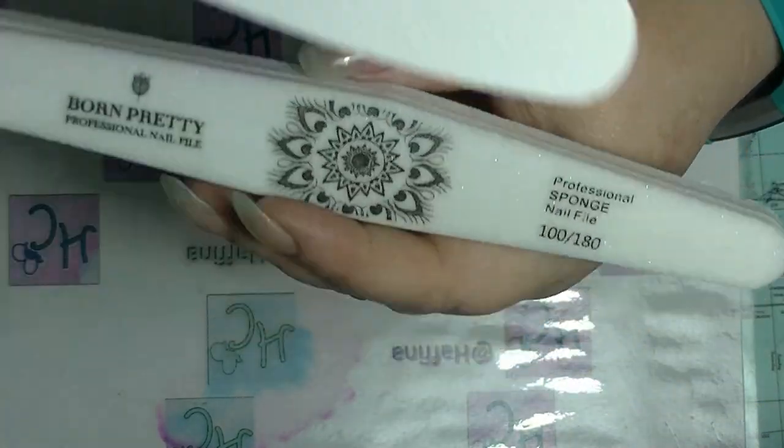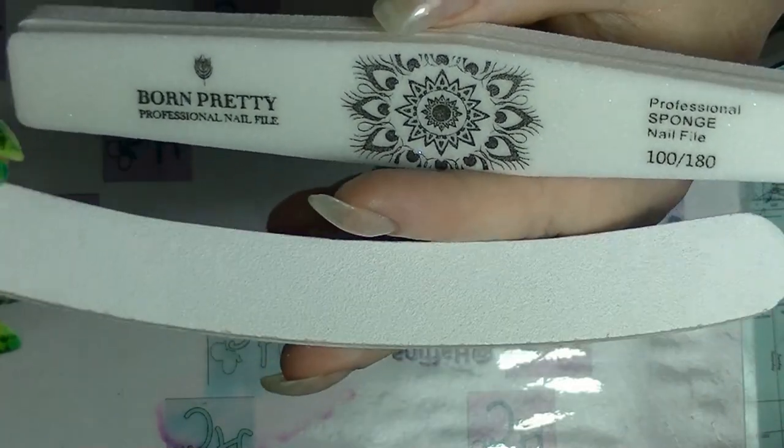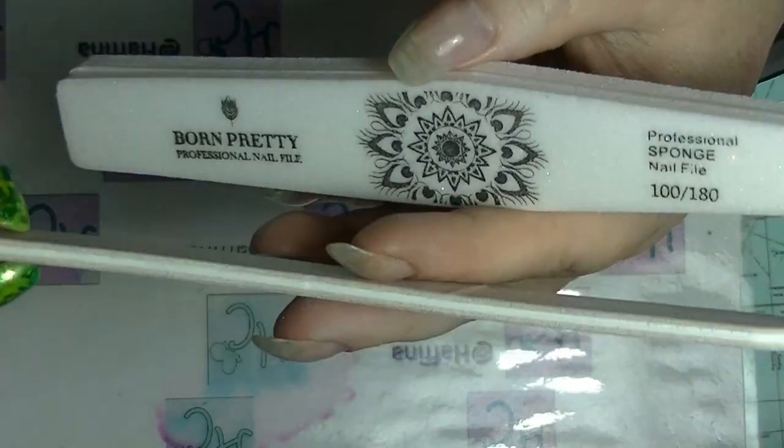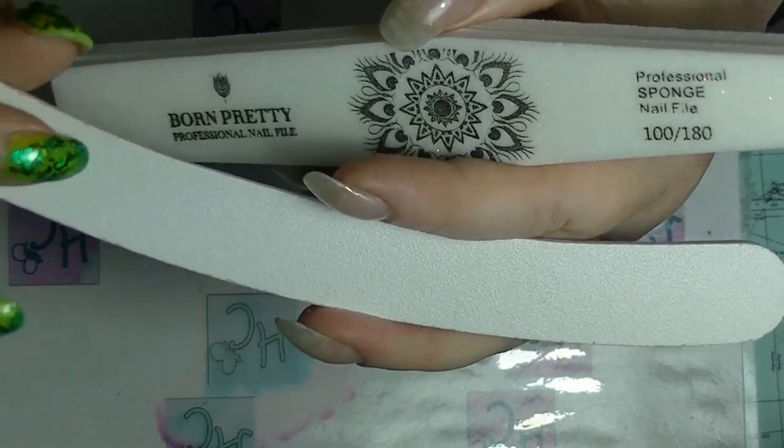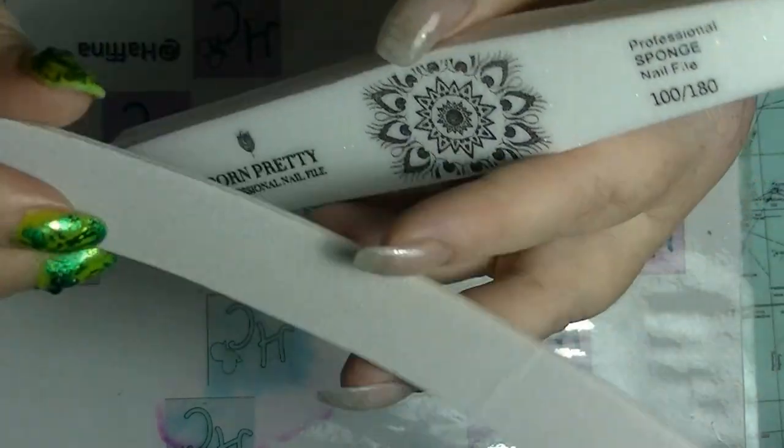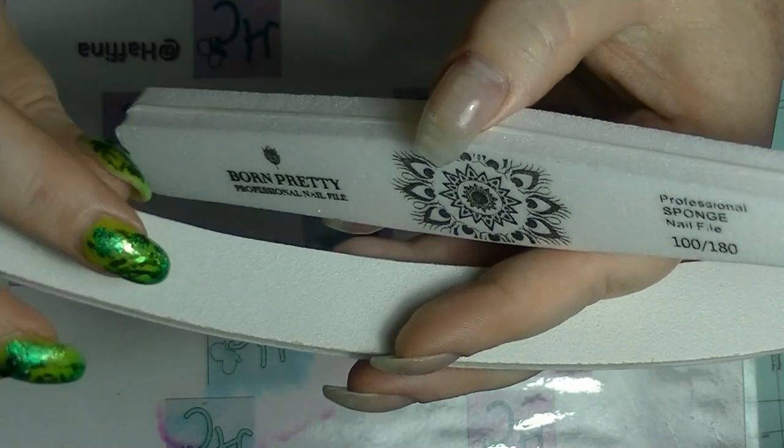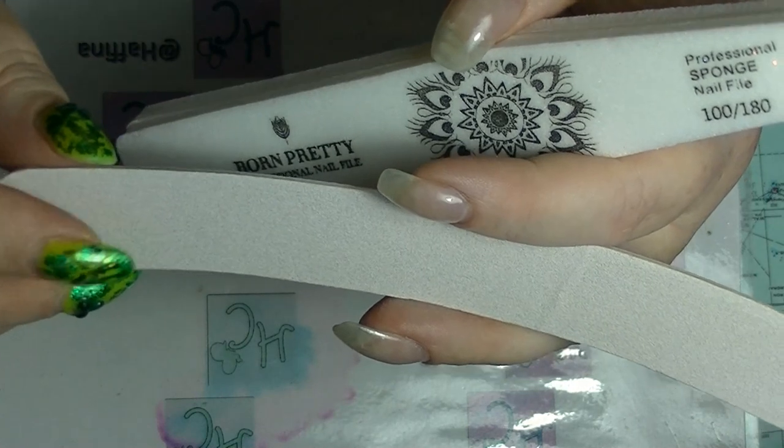As opposed to, like this one here, this is a board file. And I'm pretty sure that this is 100, 180 as well. And you can see that this side is considerably rougher than this side is. This is the side that I use to shape nails, and this side is the one that I use to smooth them out.